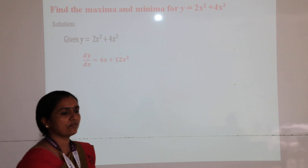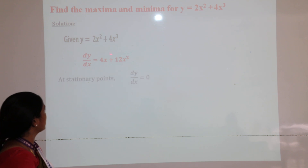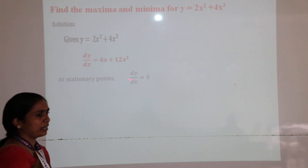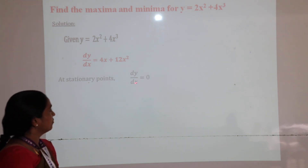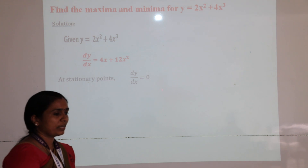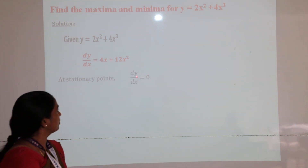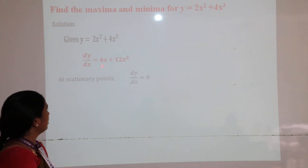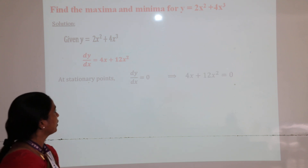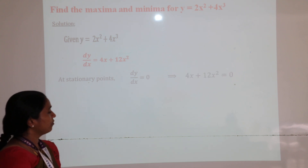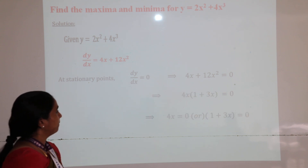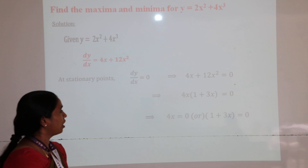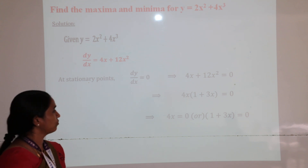You will find the first derivative: 2x³ + 4x², which gives dy/dx = 4x + 12x². At stationary points, we put dy/dx = 0 and equate the equation to 0. So we are equating 4x + 12x² = 0. By simplifying and factorizing, we get x = 0 and x = −1/3. So these are the two stationary points.